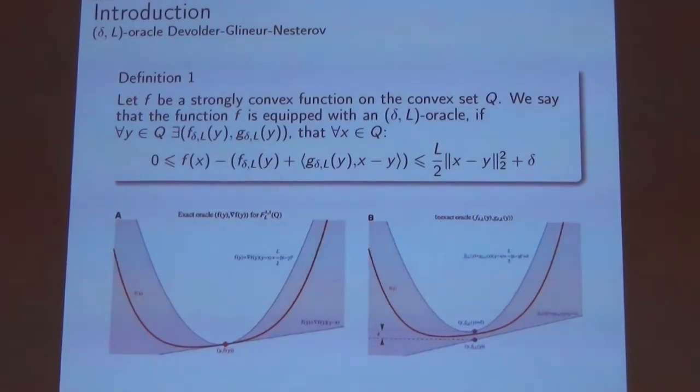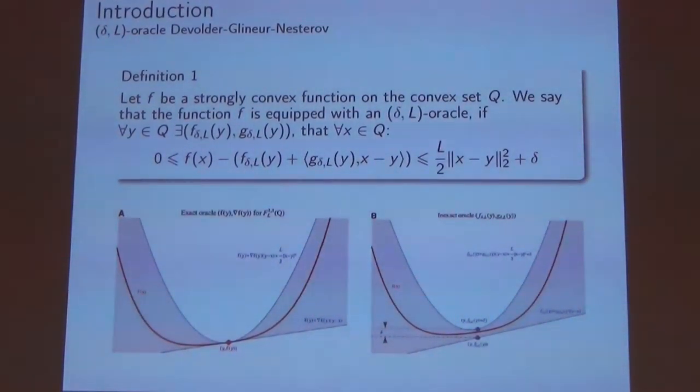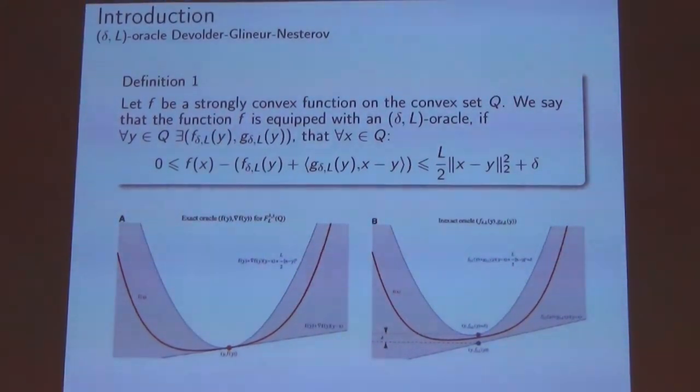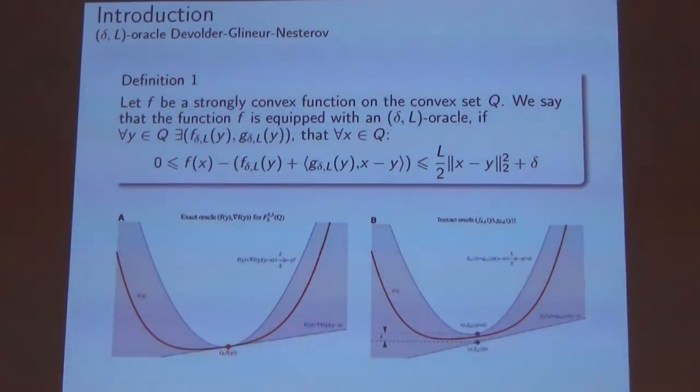The first thing that I want to talk about is the Delta-L oracle by Devolder-Glineur-Nesterov. Here instead of having the gradient and the function value, we have some f Delta-L and g Delta-L that satisfy this inequality.